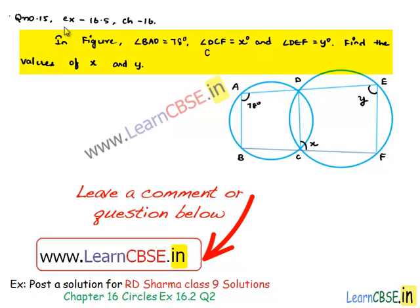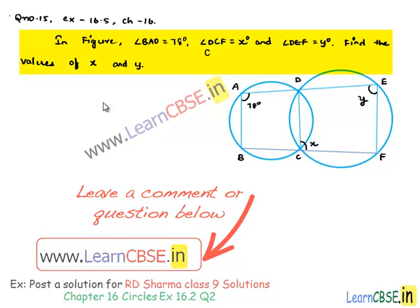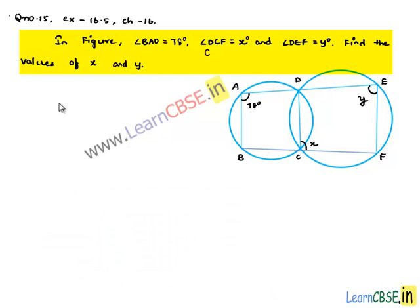Let us solve question number 15 from exercise 16.5, chapter 16. In the figure, angle BAD is equal to 78 degrees, angle DCF is equal to x degrees, and angle DEF is equal to y degrees. Find the values of x and y.